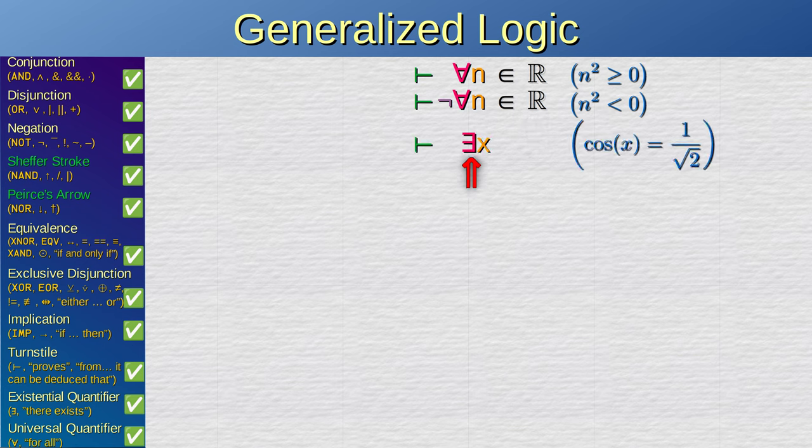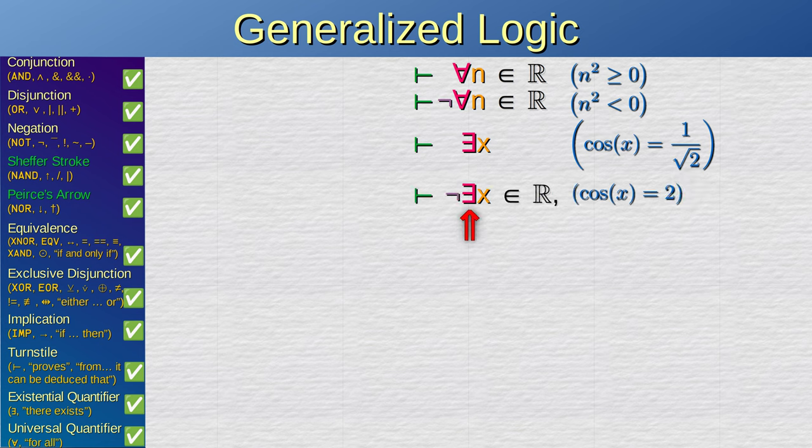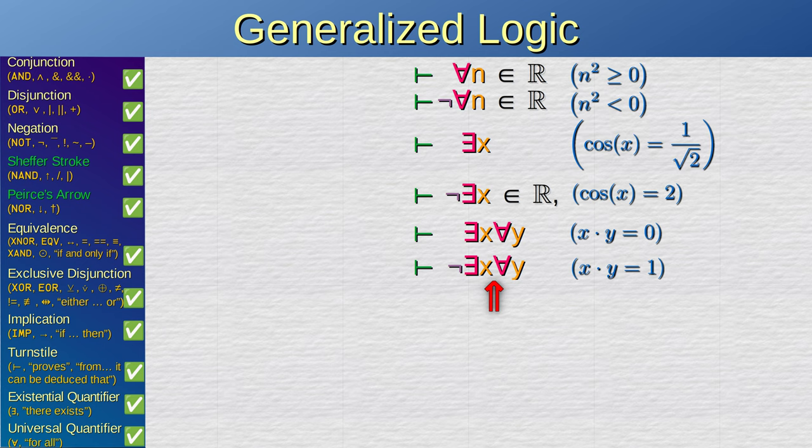And there exists some value of x for which cosine of x is the inverse of square root of 2. And there exists no value of x within real numbers for which cosine of x is 2. And there exists some value of x for which for all values of y, it is true that x times y is zero. And there exists no value of x for which for all values of y, it is true that x times y is 1. There is a symbol for that too. A crossed out reverse E.